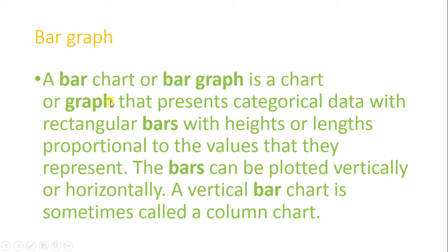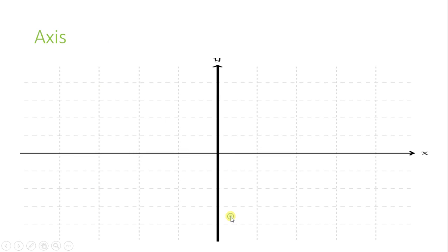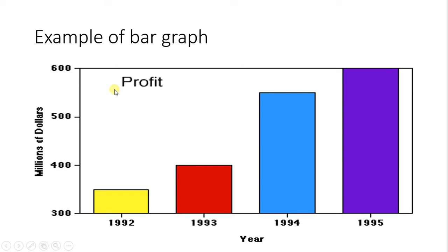So the question is, what is the bar graph? A bar graph is a chart or graph that represents categorical data with rectangular bars with height or length proportional to the values that they represent. The bars can be plotted vertically or horizontally. A vertical bar chart is sometimes called a column chart.